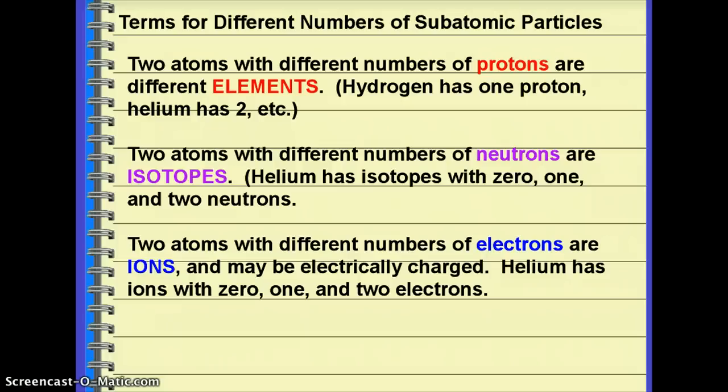So the number of protons tells you what element we have. Hydrogen has one proton. Every hydrogen atom in the universe has exactly one proton. Helium has two protons. Lithium has three protons. And so on. If you change the number of the protons in the nucleus, you have a completely different element. So the number of protons is what tells you what element you have.